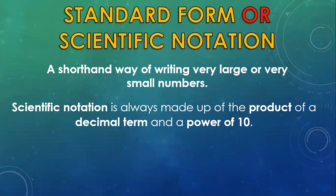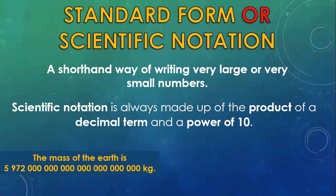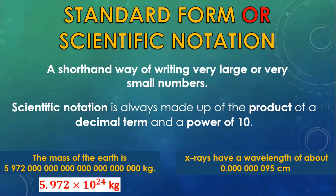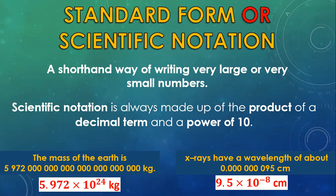Do you know what the mass of the earth is? The mass of the earth is 5 septillion 972 sextillion kilograms. But we could have just simply said the mass of the earth is 5.972 times 10 to the 24th power kg. What about x-rays having a wavelength of 0.0000000095 centimeters? We could simply rewrite this as 9.5 times 10 to the negative 8th centimeters.